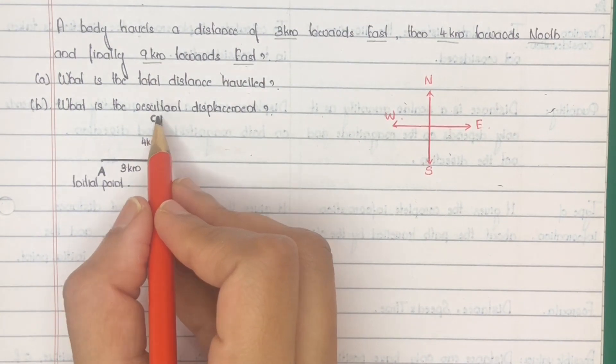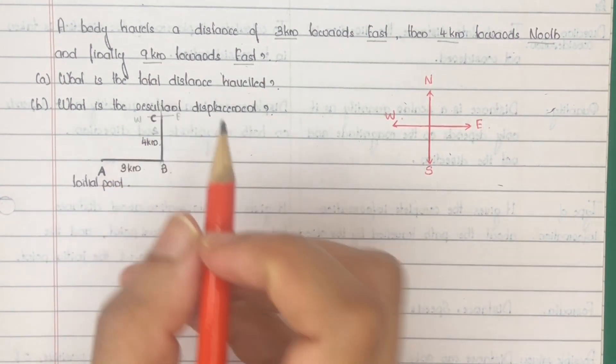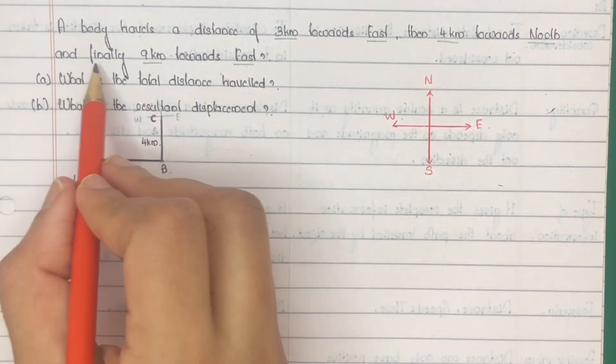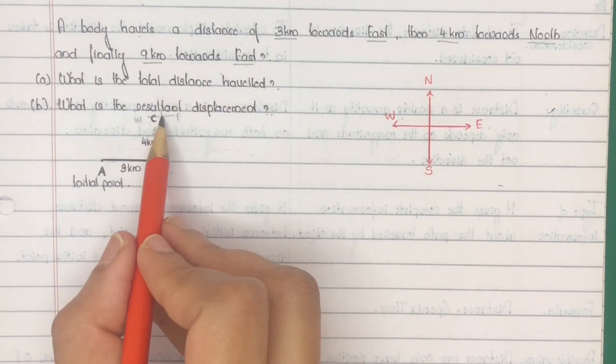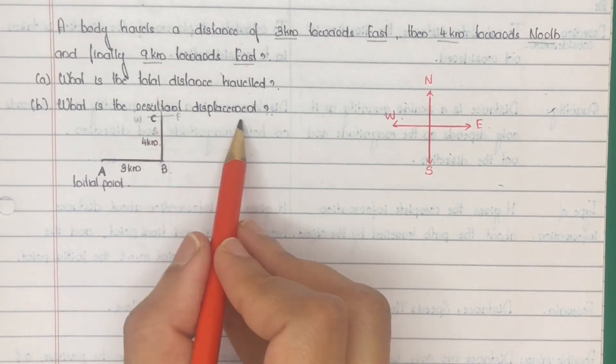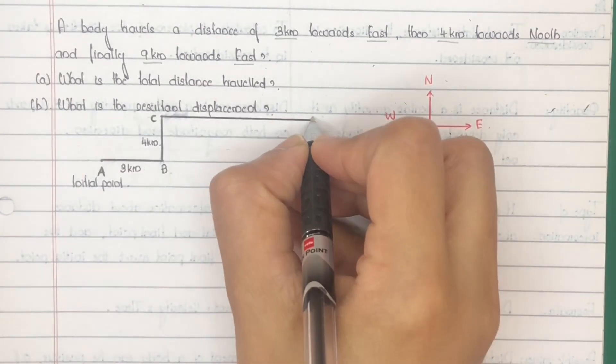Now the body is at point C. Mark rough direction at point C. Next, and finally 9 km towards east. East means towards the right side, 9 km towards the right side. And mark this point as D.